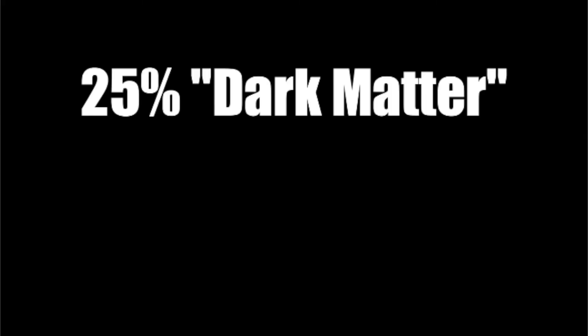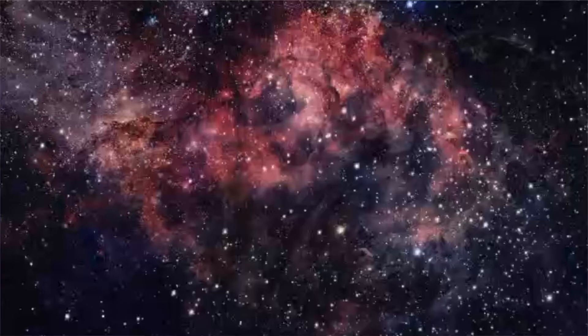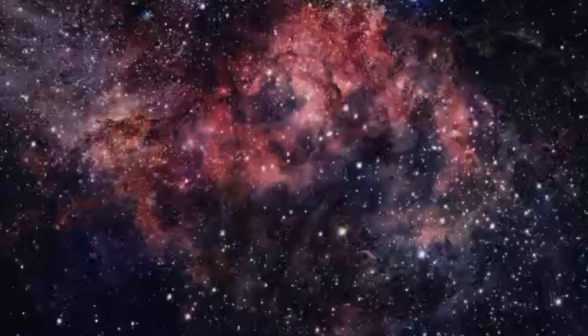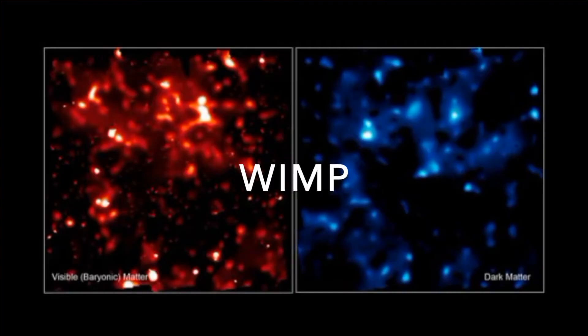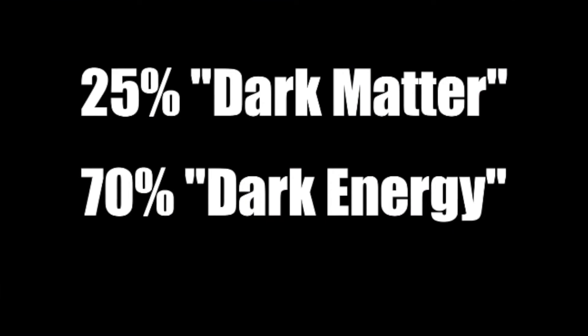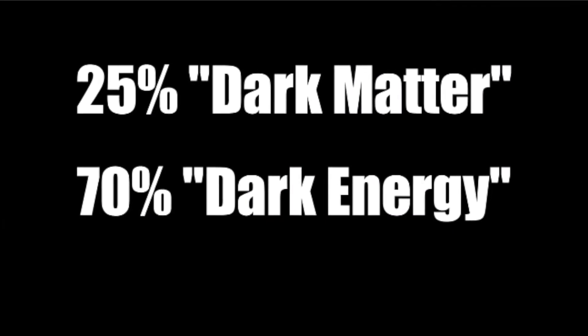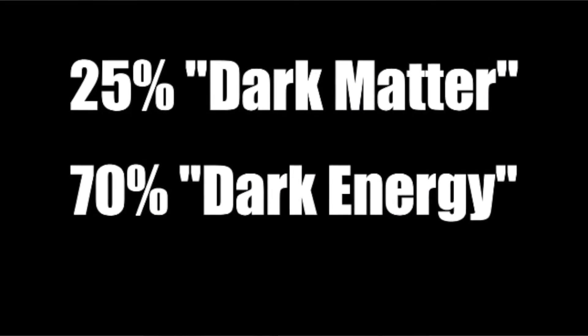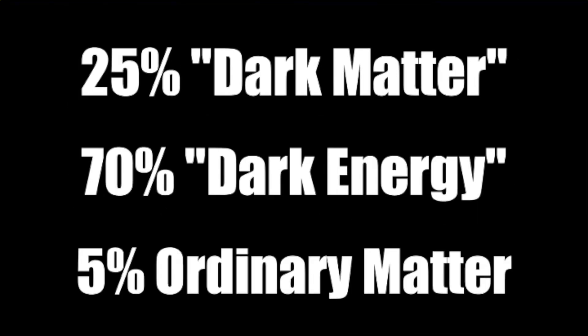Big Bang cosmologists propose that about 25% of the universe is made up of dark matter, possibly consisting of non-standard particles such as neutrinos or weakly interacting massive particles. 70% of the universe in their models is made up of the even more obscure dark energy, leaving only 5% of the universe as ordinary matter.